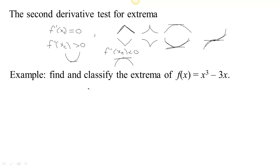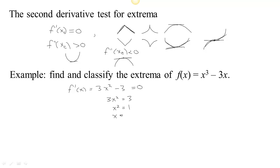Let's look at an example. For this function, we take the first derivative and get 3x² − 3. That's always defined, so we look for places where it is 0. We find 3x² = 3, so x² = 1, meaning x = ±1. These are our critical points.